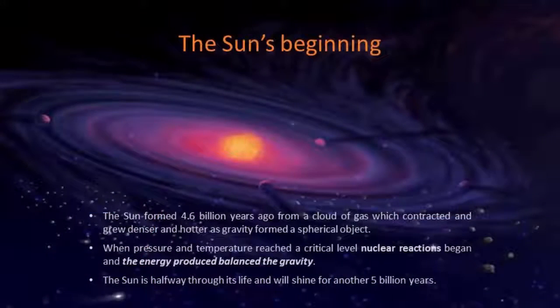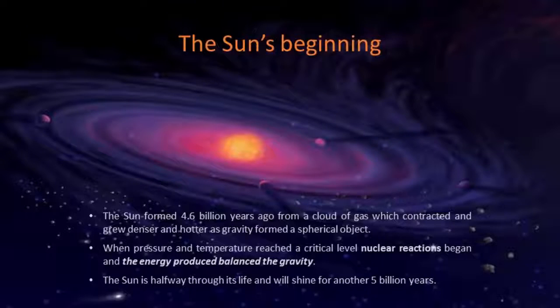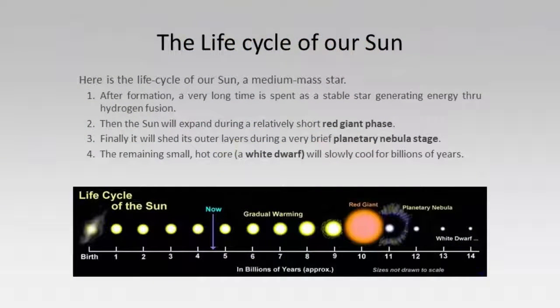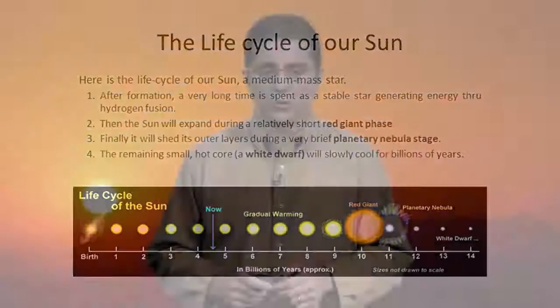We think the Sun is about 4.6 billion years old and will probably last about that much longer, so it's roughly halfway through its life cycle. As the Sun forms, gravity shapes it into a sphere with extremely high production of energy. The Sun then settles into a very stable phase, producing energy through hydrogen fusion in its core.